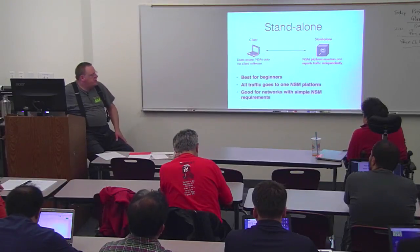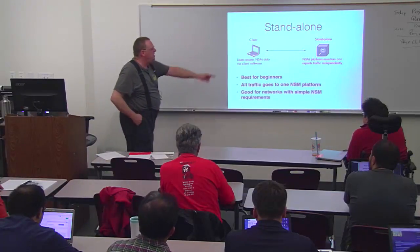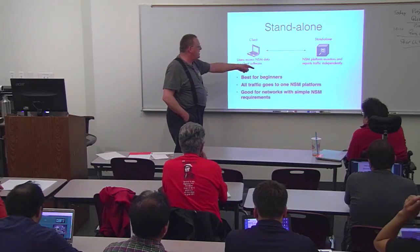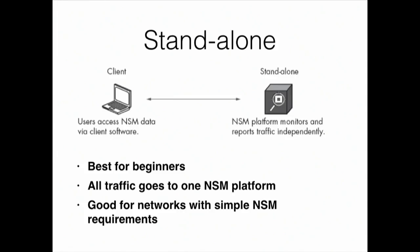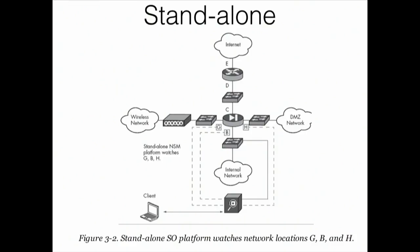In standalone mode, your network security platform receives the data and monitors it right there. You connect from your host through a web interface to a tool like Elsa/Explico and can see information about the data. This is what we're doing in our projects — just to see how Security Onion works. It's good only for small networks with a small amount of traffic.